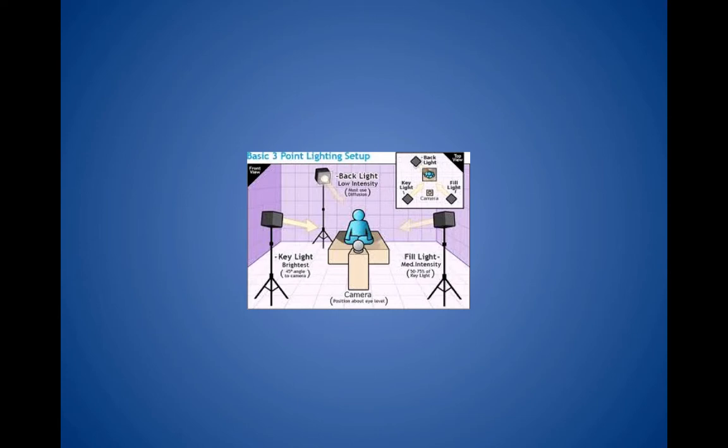In a basic three-point lighting setup, the key light — the brightest — comes from about a 45-degree angle. The easiest way to set this up is to stand where the camera is, put your arms up at 45 degrees pointing at the object, then swing them back — that's where you place the lights. The fill light needs less intensity to soften the shadows, and you can even bounce the key light off a reflector card to supply a softer fill light. The backlight provides rim light to separate the subject from the background.